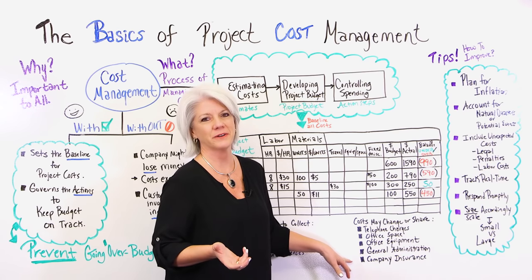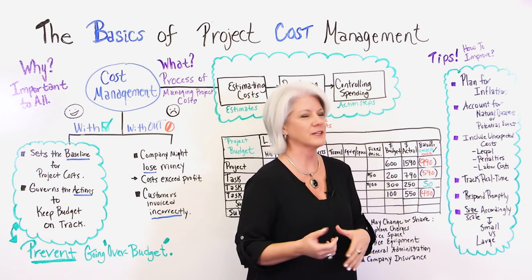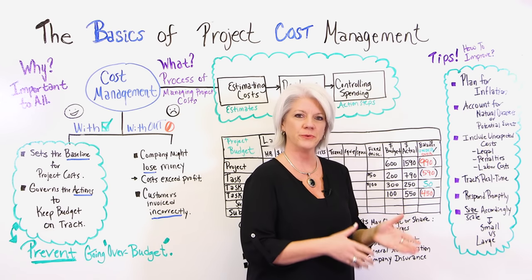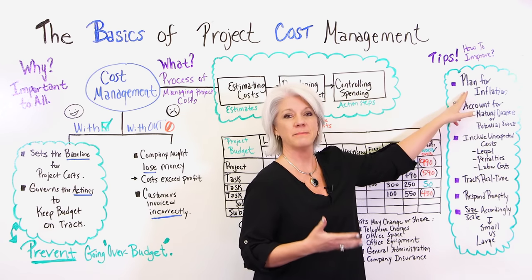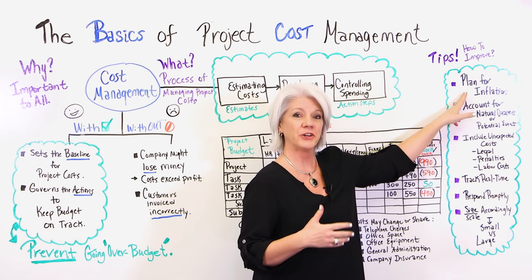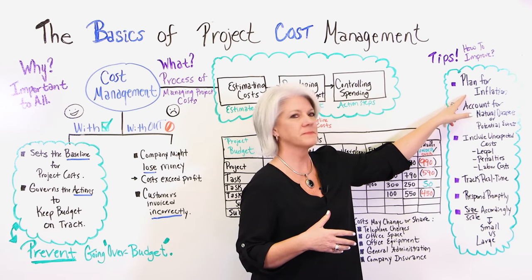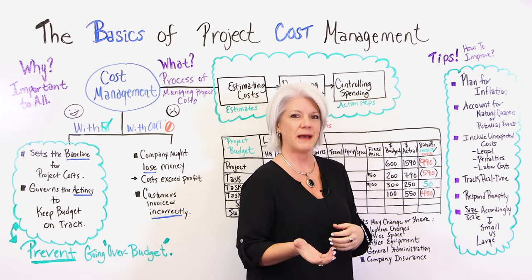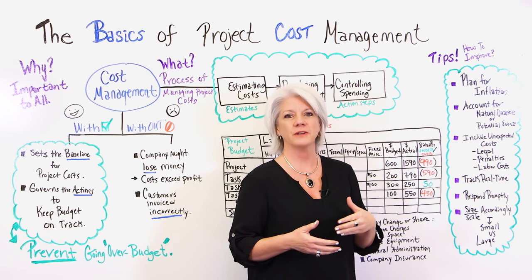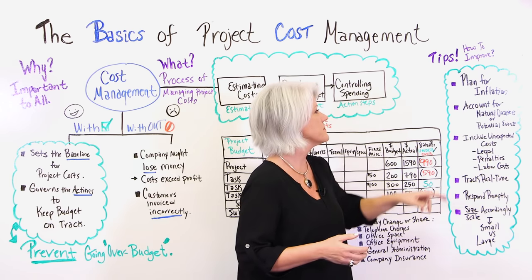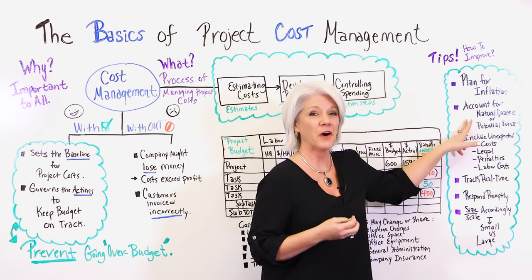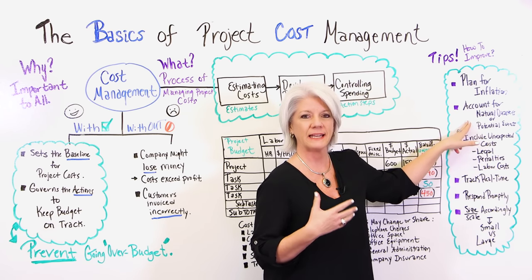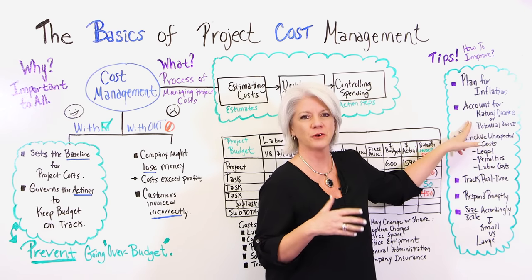So let's look at some tips on how you can improve managing your cost. First of all, you want to plan for inflation. If you happen to have a project that is short in duration, it may not be as impacted by inflation, but if an unexpected event occurs it could still impact the inflation on your project. And if you have a longer project that spans a couple of years, inflation may impact it — it may even make your costs increase or it may cause them to decrease. You also want to account for natural disasters, which can cause your costs to increase or even impact some of the resources on your project.